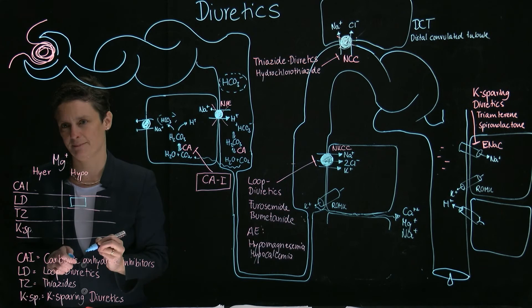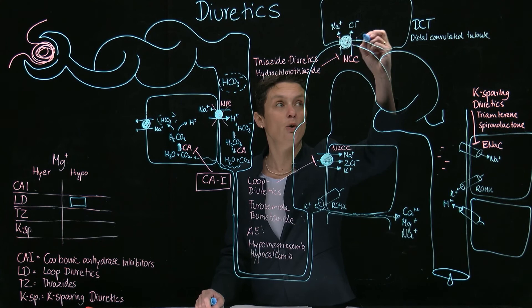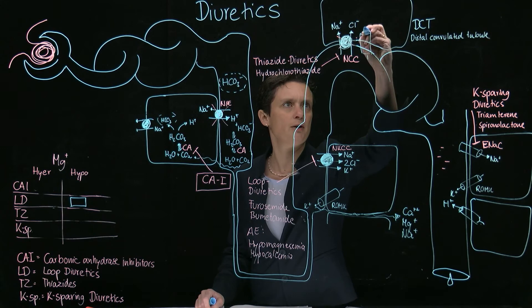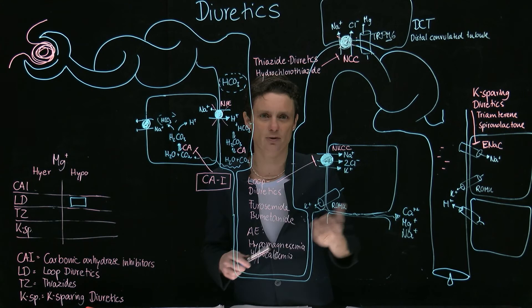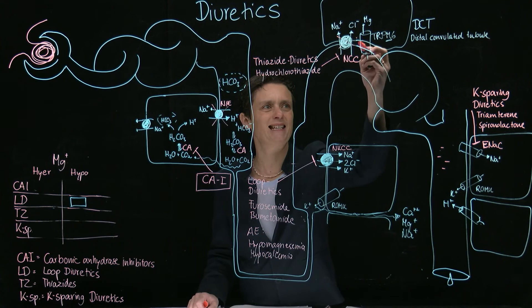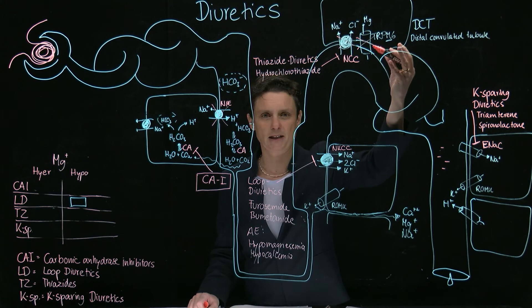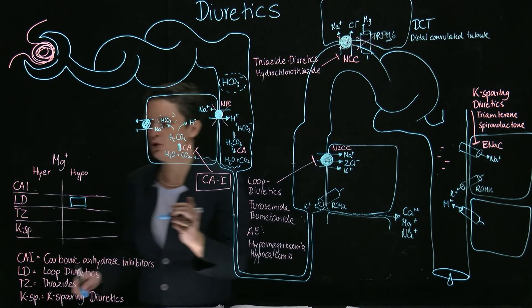For thiazides, the mechanism is a little different. In the distal convoluted tubule, there is a channel called TRPM6 that reabsorbs magnesium. It turns out that the NCC works together with TRPM6, so if you block NCC with thiazides, TRPM6 is also not working. As a consequence, thiazides also lead to hypomagnesemia.